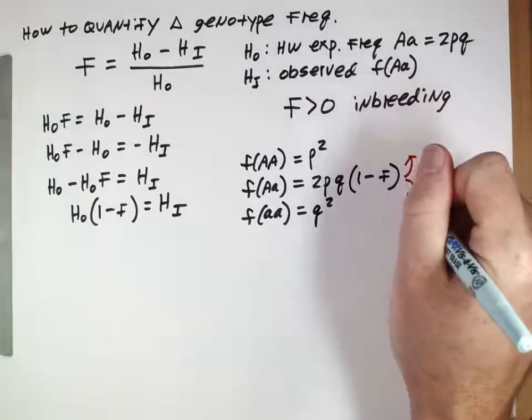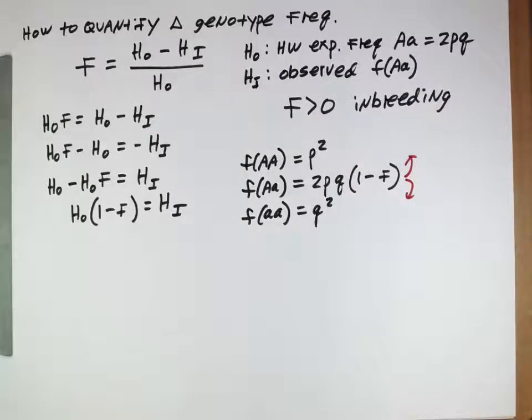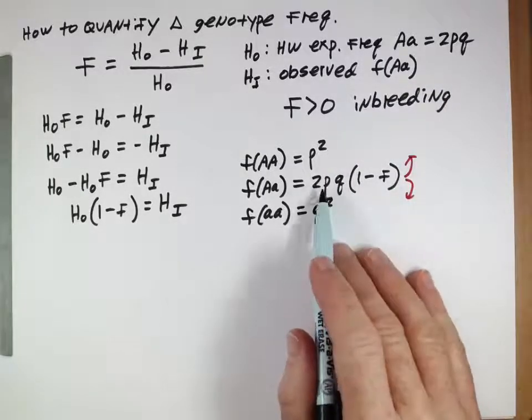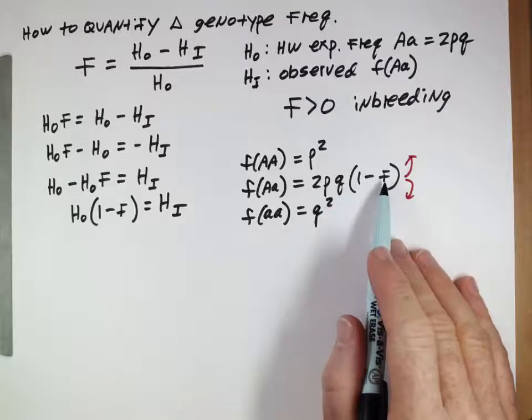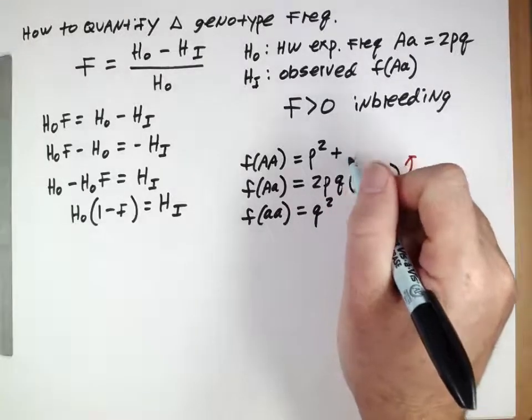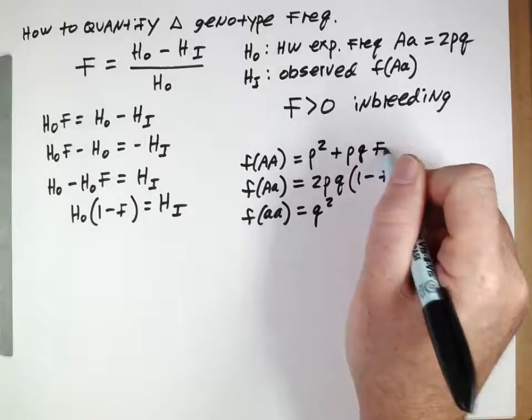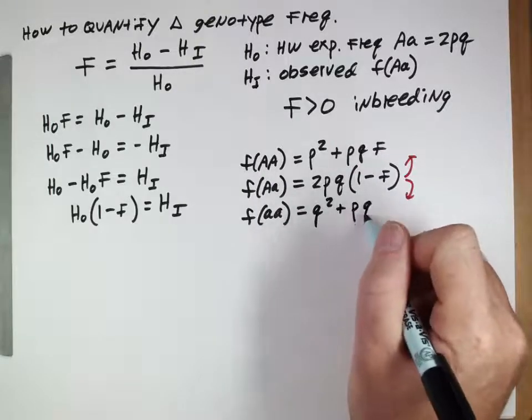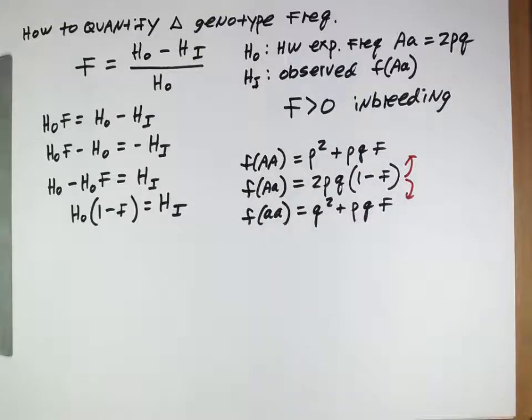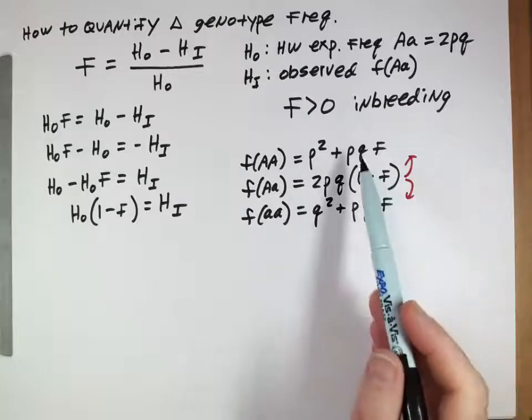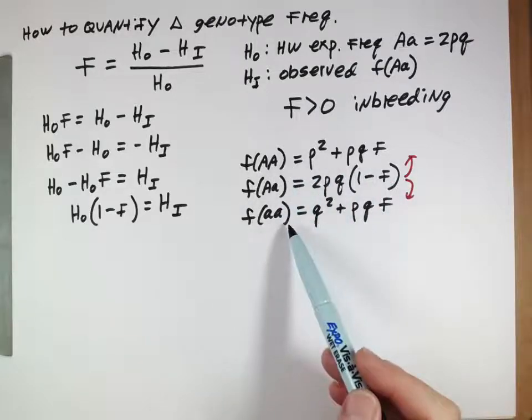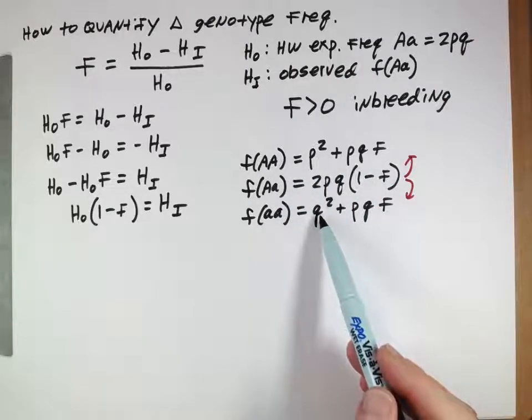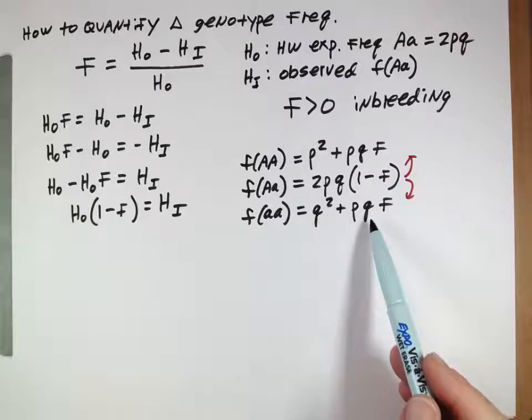If we think about what's happening to the heterozygotes, it's negative 2pqF that's being removed from here. Some of that's going to this genotype, some of that's going to this genotype. If you've got minus 2pqF, some will go here, pqF, and some will go here, pqF. So those will be our observed frequencies of these homozygous genotypes. They'll be the expectation from Hardy-Weinberg plus pqF.